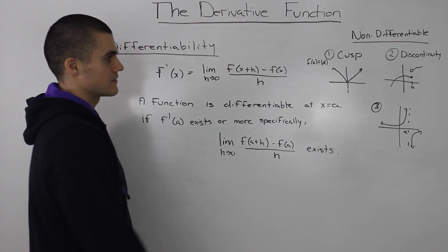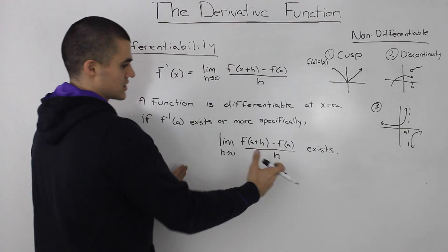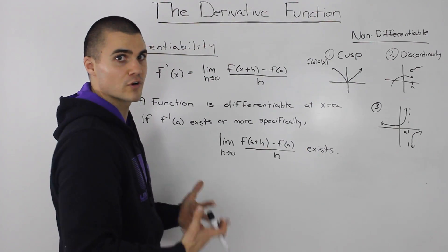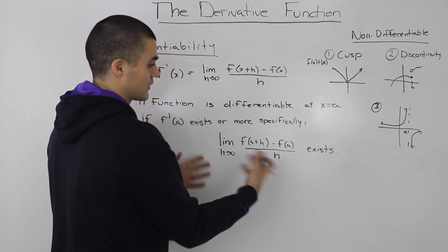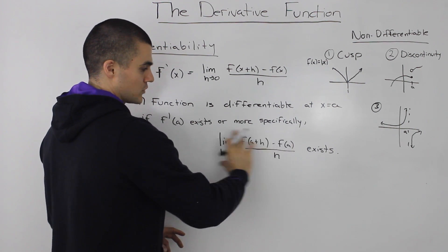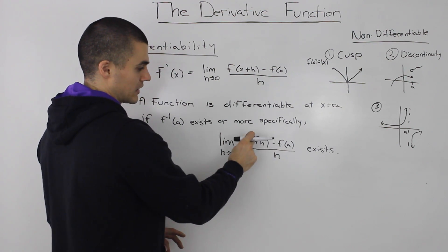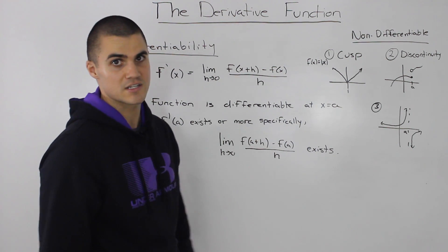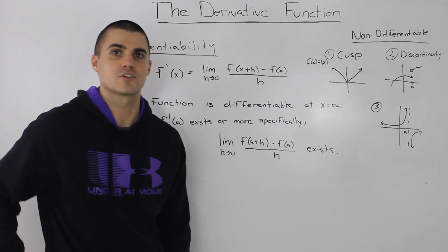But besides knowing that, the most important thing to know is if you're proving that a function is not differentiable at a certain point, or if it is differentiable, you got to take the limit. You have to take the difference quotient and solve the limit at that specific point, see if the limit exists or not, and that will tell you whether it's differentiable or not.